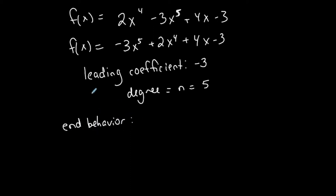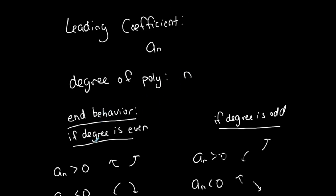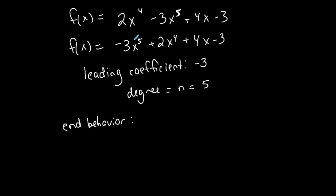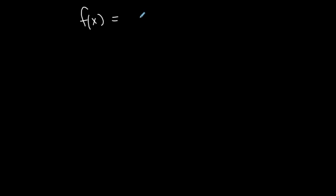End behavior is determined by the degree and leading coefficient. Here the degree is 5, which is odd, and the leading coefficient is negative 3, which is negative. So with an odd degree and a negative leading coefficient, the end behavior rises on the left and falls on the right.